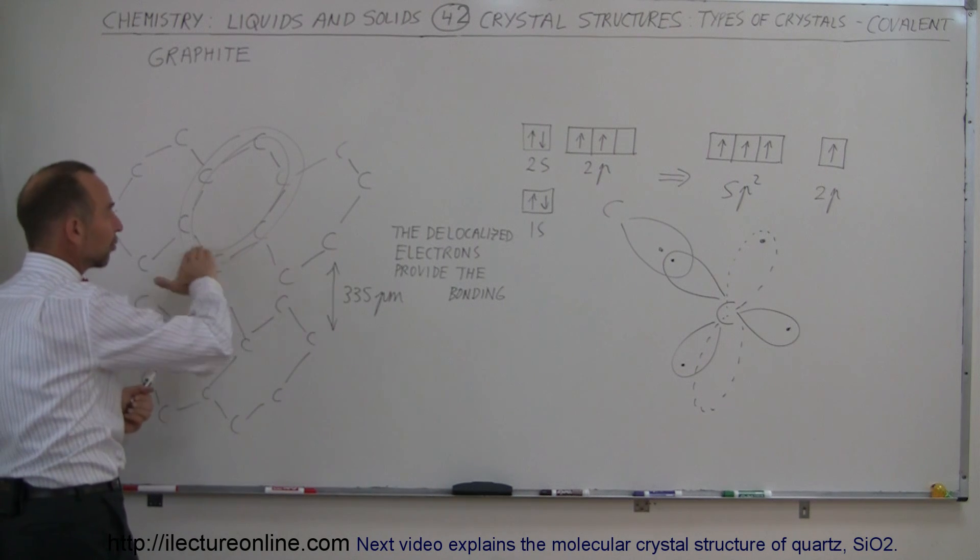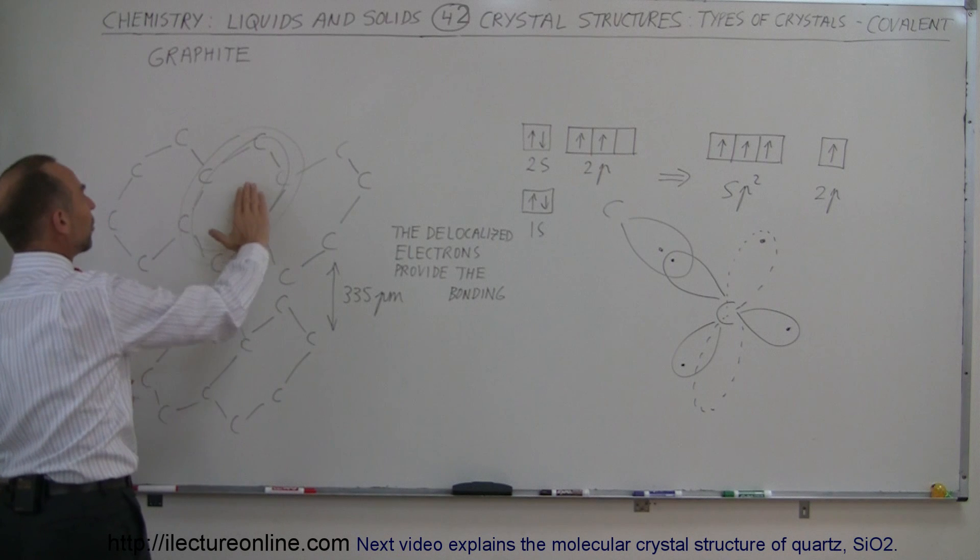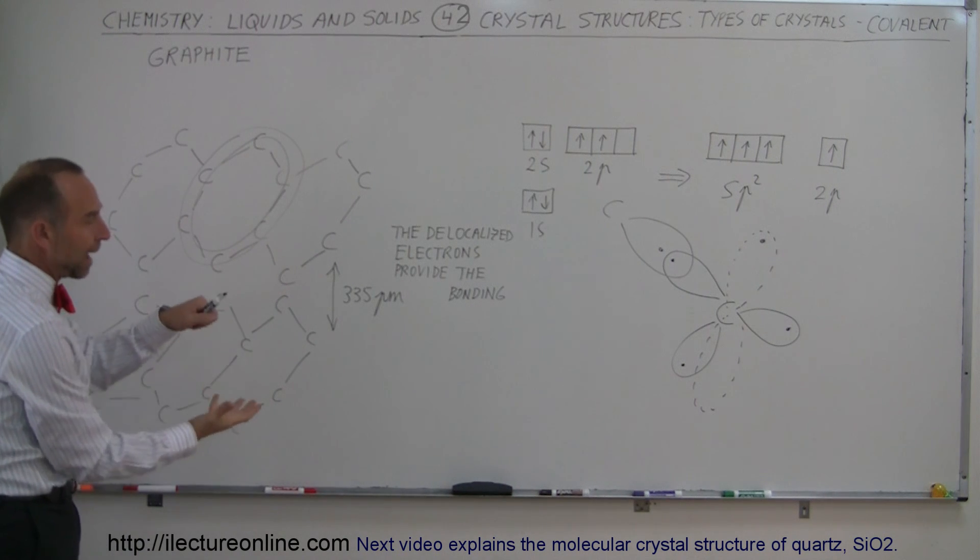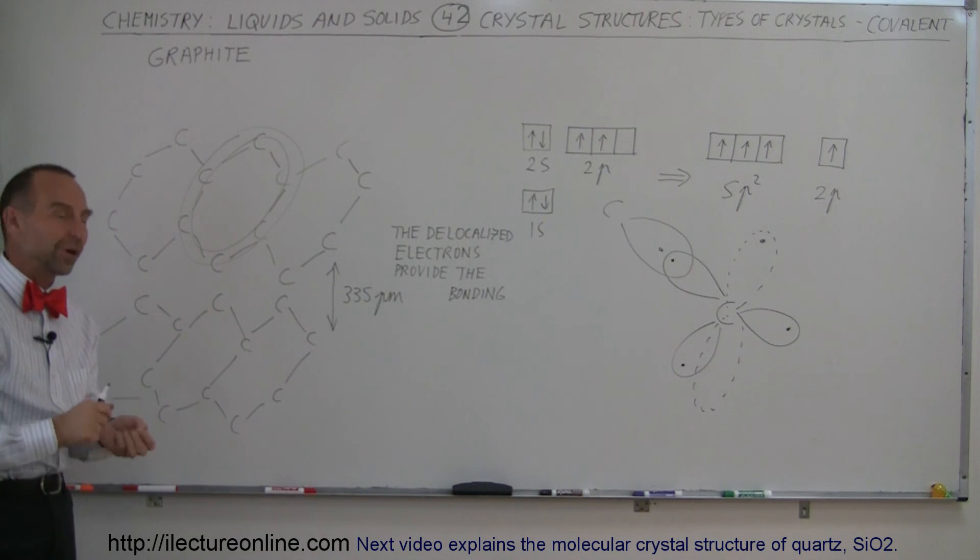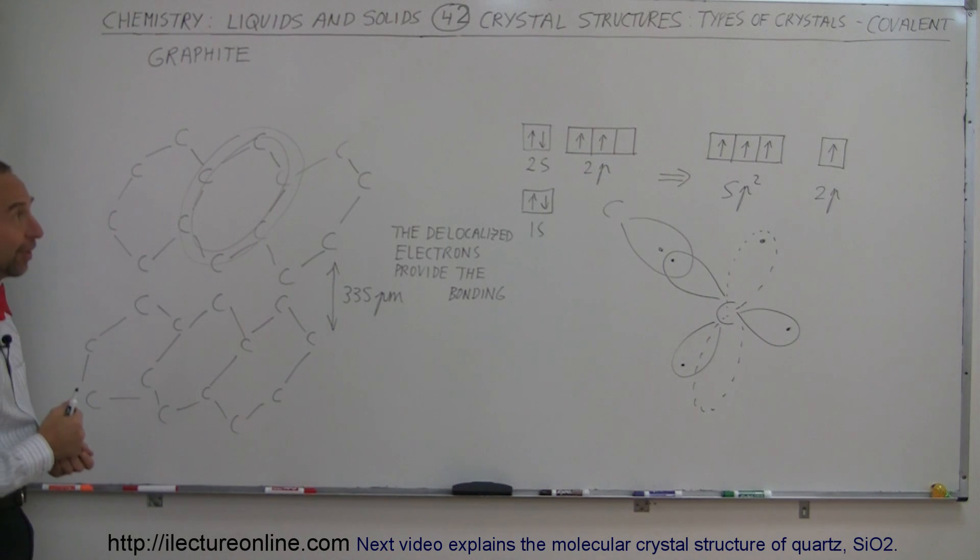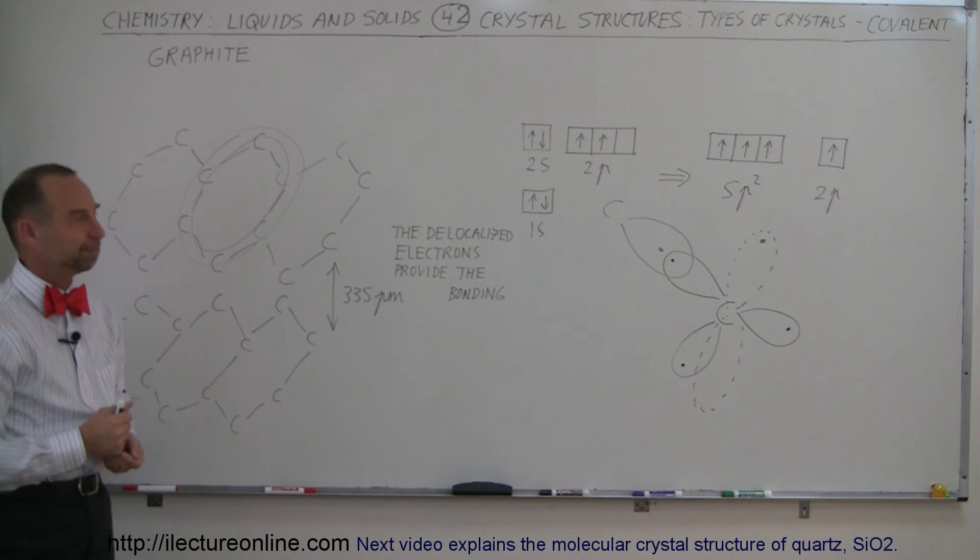But the connection is made by the van der Waals forces created by the free electrons that roam around above and below each of those sheets. So you can pack them together like that but again it becomes kind of a sliding mess when you start moving things around. There's another example of covalent bonding.